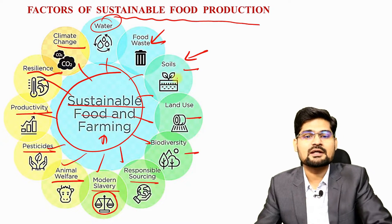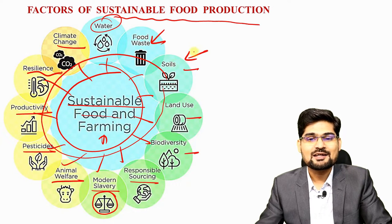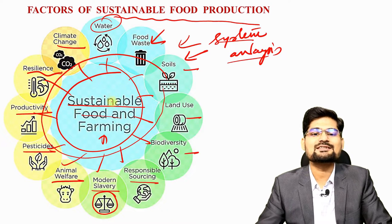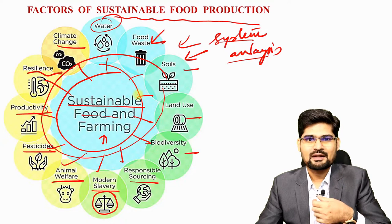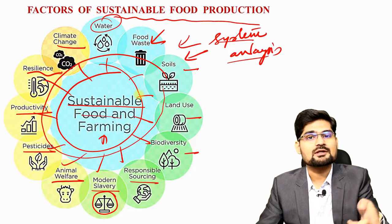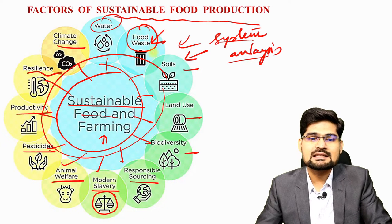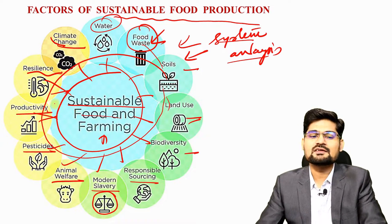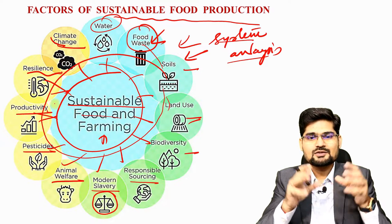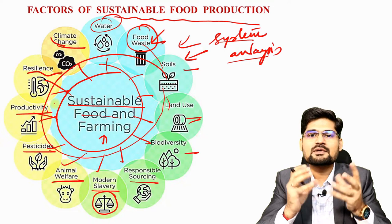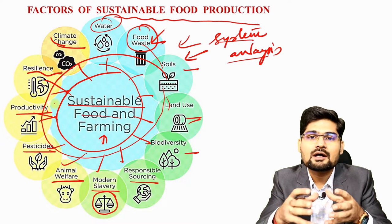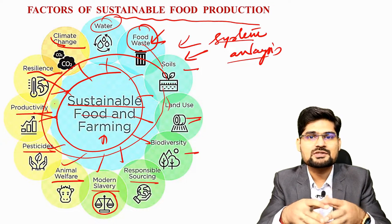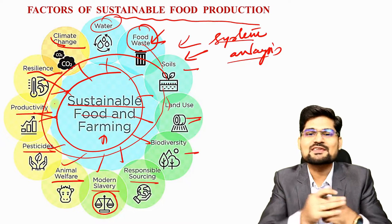If we are not working on any one of these components, the entire system gets derailed. This is an example of systems analysis — a food production system in which if one component is weak, it will trigger problems across the system. Even food wastage is linked to so many other factors. Even changing land use is linked to so many other factors. Climate change, resilience, productivity — everything is interconnected. This diagram gives us an overview of how sustainable food production can be achieved by taking necessary precautions and remedial measures in each of these sectors.